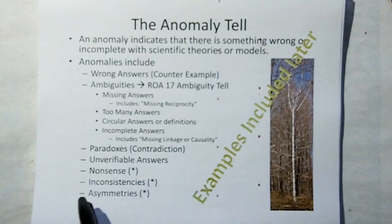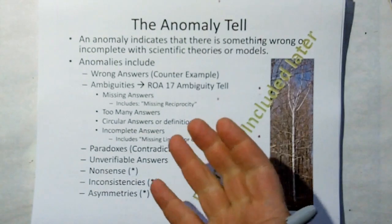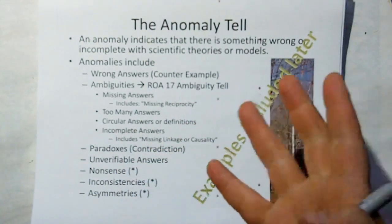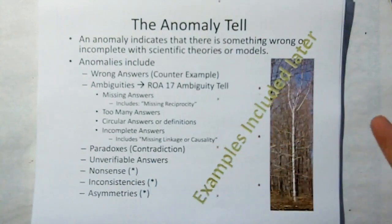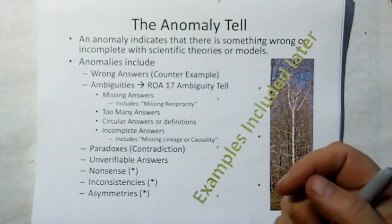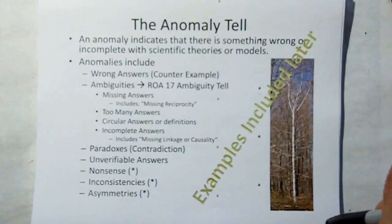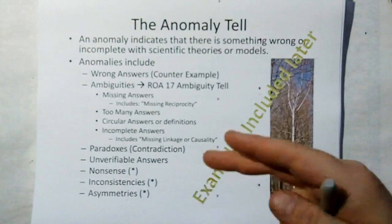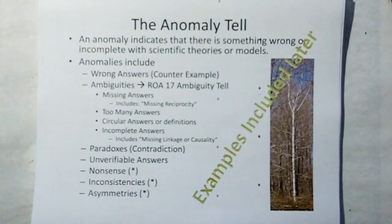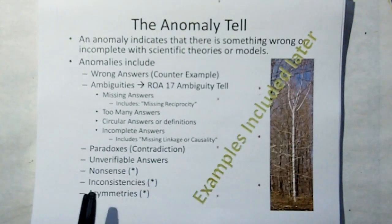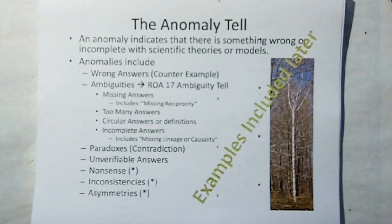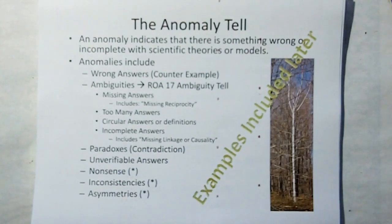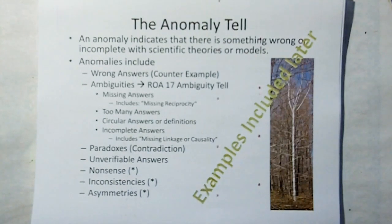Unverifiable answers — in other words, dark matter. We've got this answer that there should be dark matter, but we can't find it. Maybe we just don't know how to measure it yet — this is an example of something that's not verifiable yet, if it will ever be verifiable. Nonsense things, inconsistencies, and asymmetries.